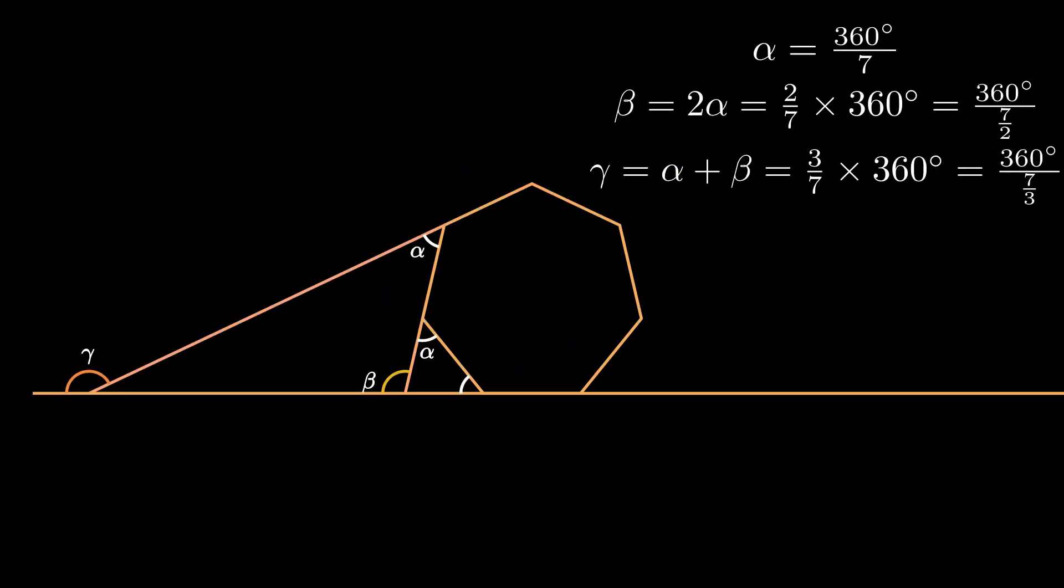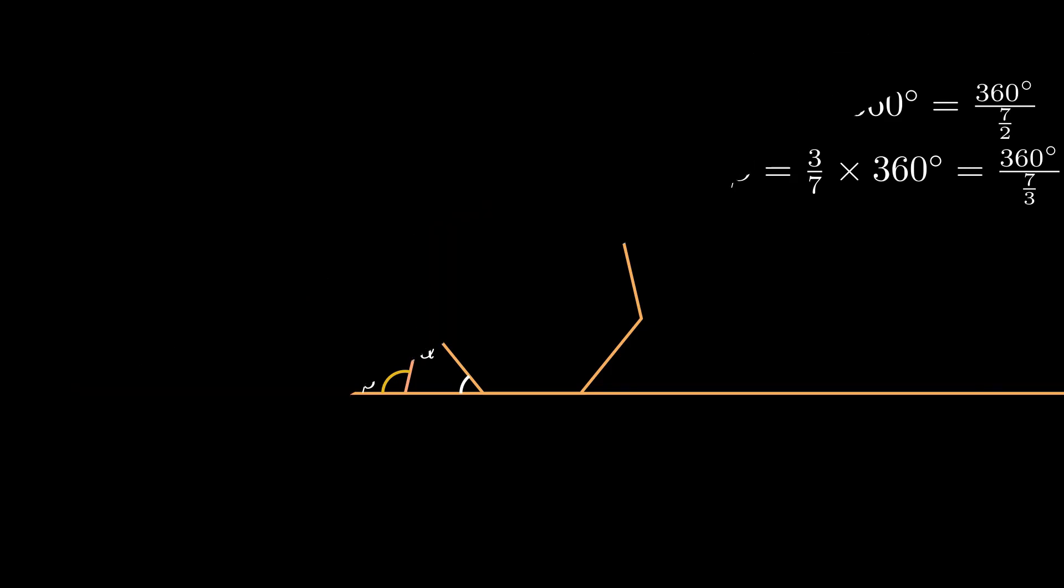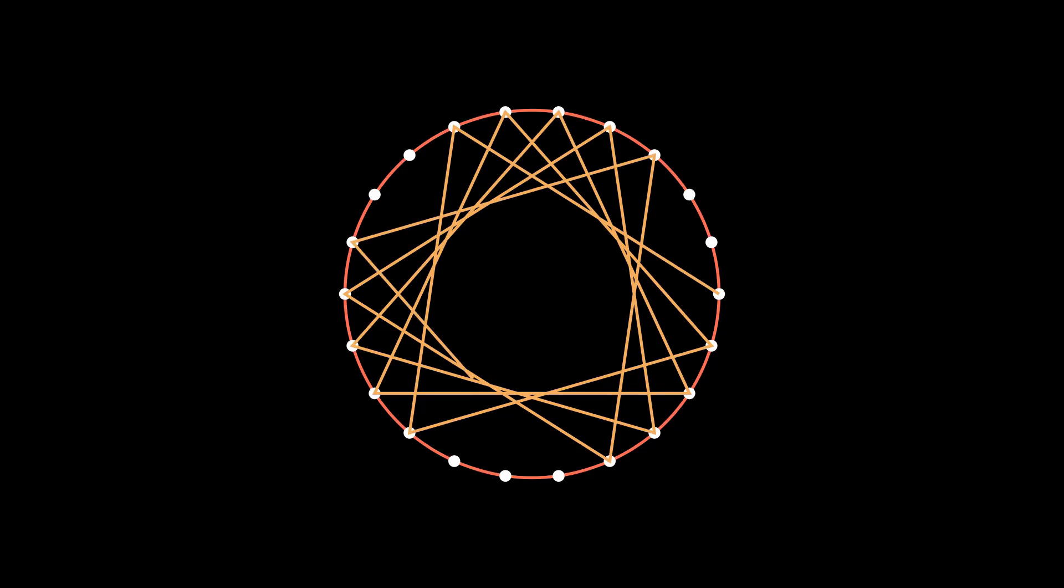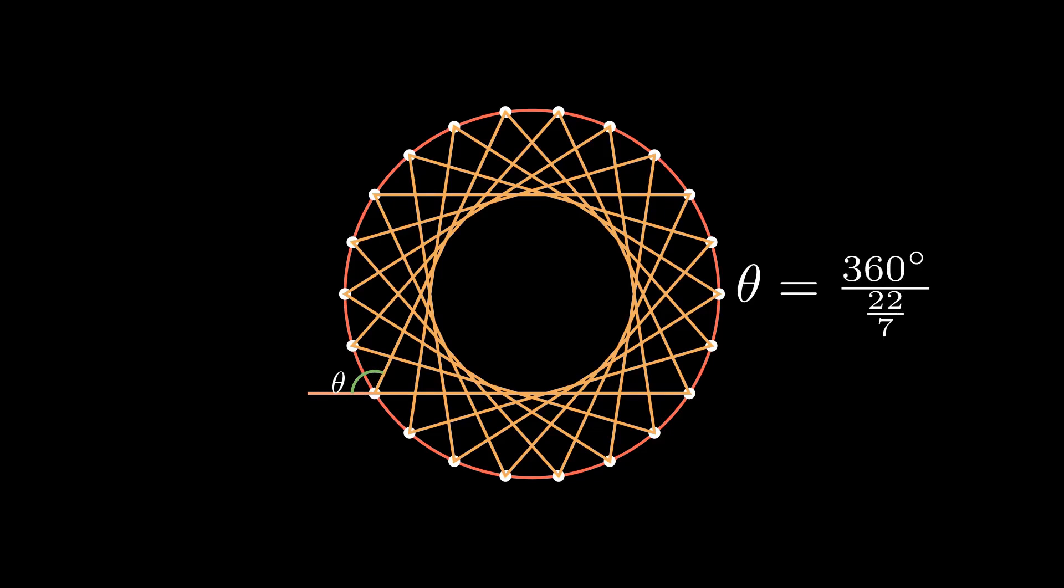There are two good things when thinking of a fractional number of sides. Firstly, you know how to draw the shape. For example, to draw a 22 by 7-sided star, plot 22 equally spaced points on a circle, then join every 7. Secondly, we immediately know the exterior angle to be 360 degrees by 22 sevenths.